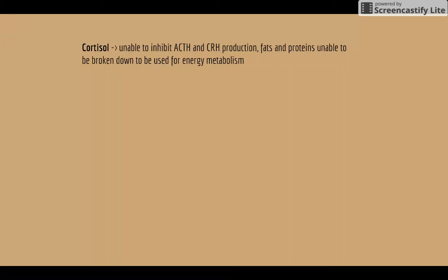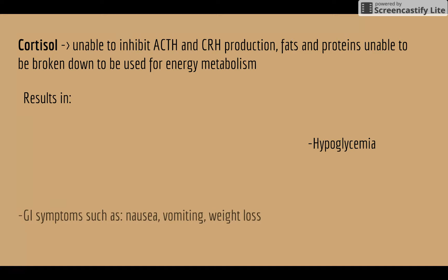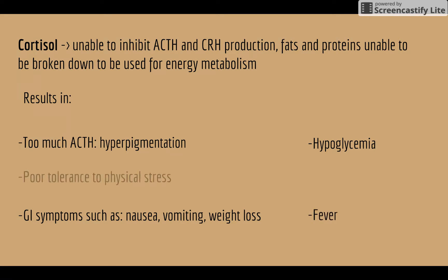A lack of cortisol results in the inability to inhibit ACTH and CRH production. Fats and proteins are also unable to be broken down and used for energy. This causes hypoglycemia, nausea, vomiting, weight loss, fever, poor tolerance to physical stress, weakness, and too much ACTH in the body causes hyperpigmentation of the skin.